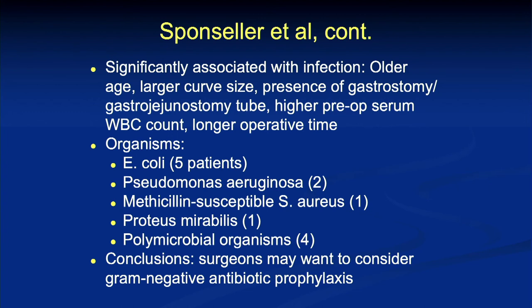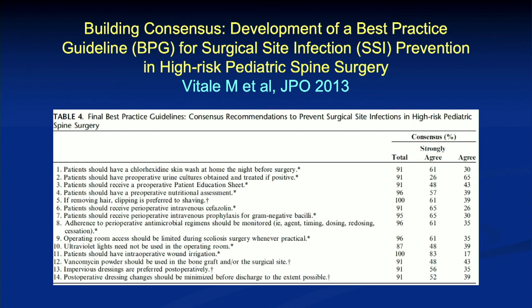The conclusion became that we need to prophylax against not only gram positives but also gram negatives. Mike Vitale has done considerable work on the development of best practices for surgical site infection prevention in high-risk pediatric spine patients — a list of 14 different recommendations including scrubbing their skin the night before, making sure you have urine cultures, patient education, and giving both gram positive and gram negative coverage. These are very important for us to be cognizant of and incorporate into our practices, particularly making sure we limit OR traffic as well.